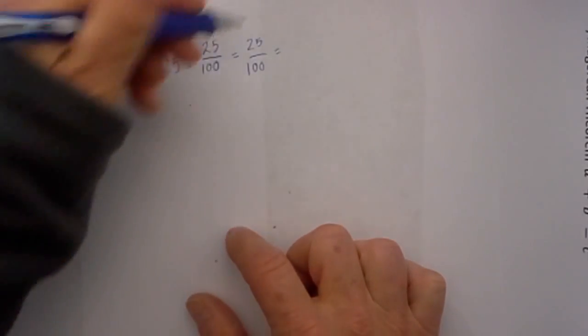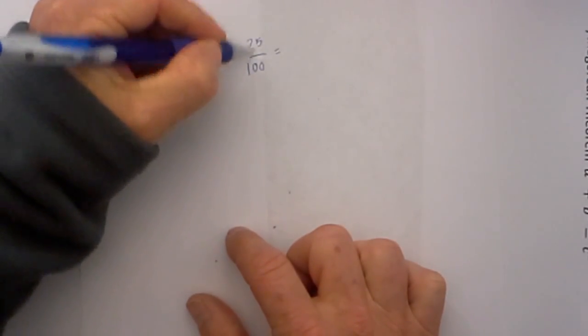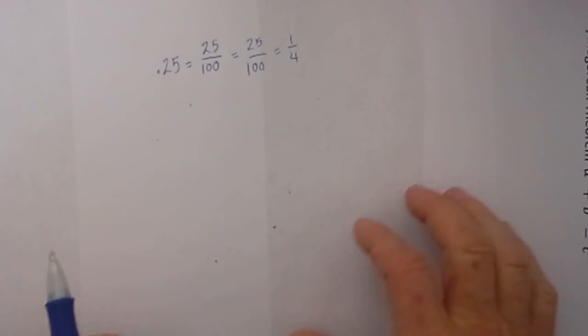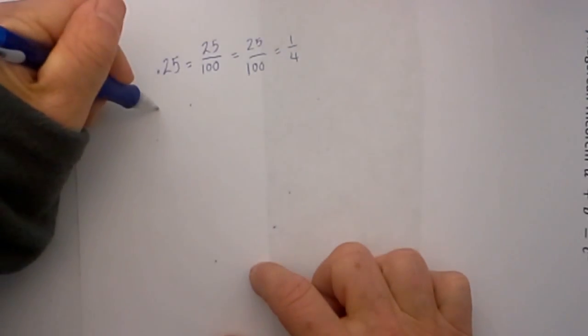Then all we have to do is reduce and I know that 25 will go into 100 four times so that fraction is 1/4. Let's look at another example.